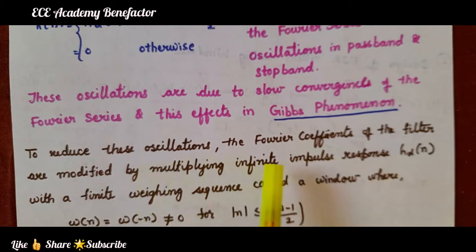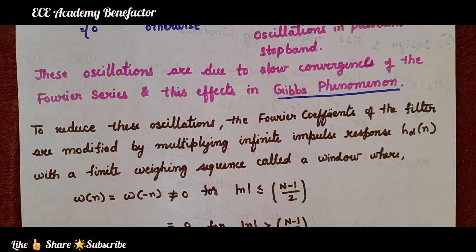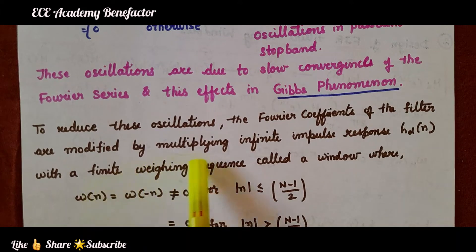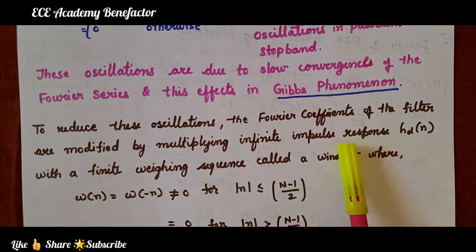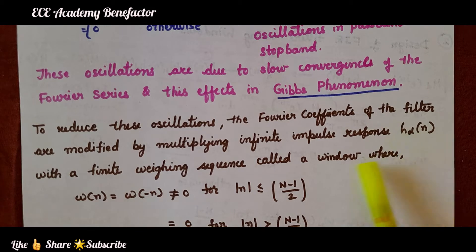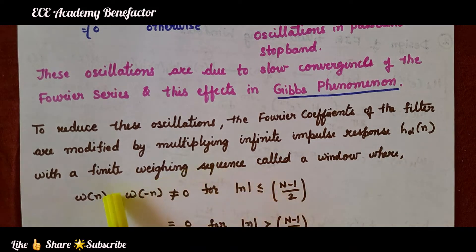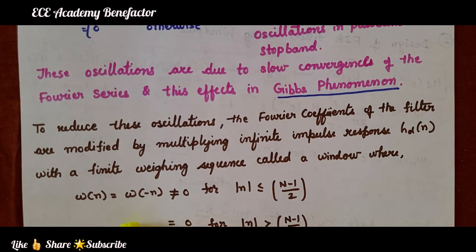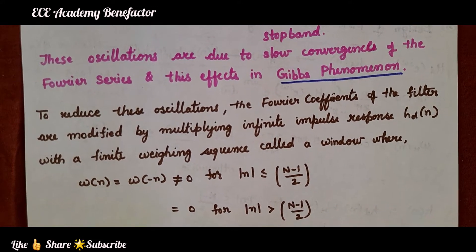To reduce these oscillations, the Fourier coefficients of the filter are modified by multiplying the infinite impulse response H_d(n) with a finite weighing sequence called a window. So H_d(n) is multiplied by a finite weighing sequence known as a window.